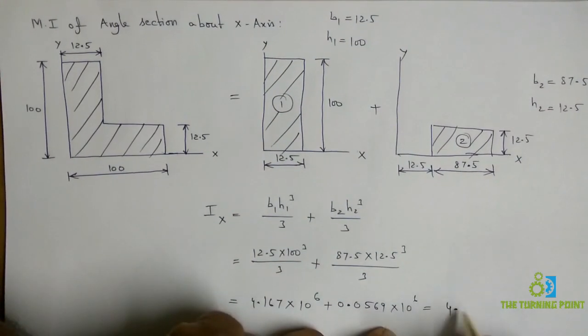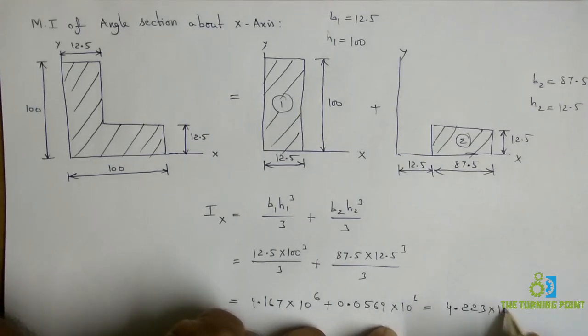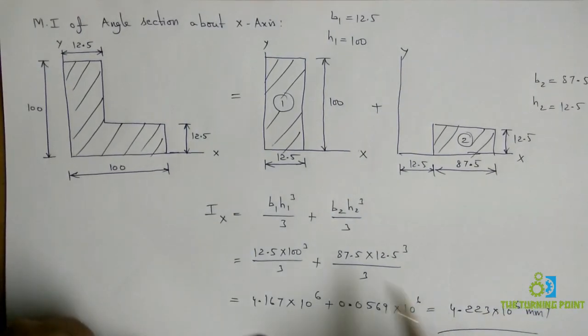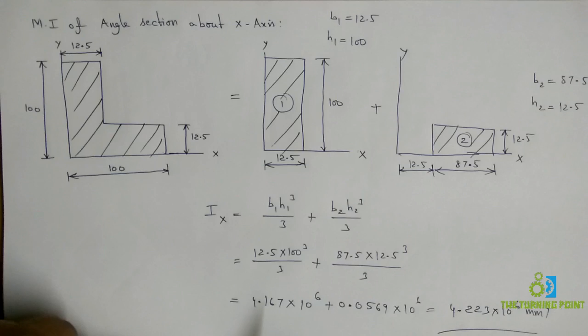you will get 4.223 into 10 power 6 mm power 4. This is the moment of inertia of the given angle section about x-axis.